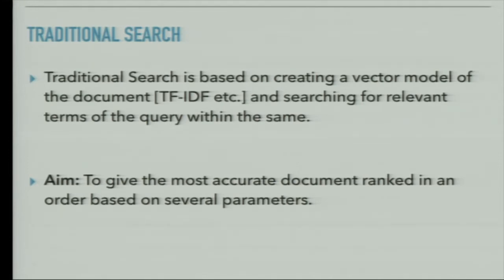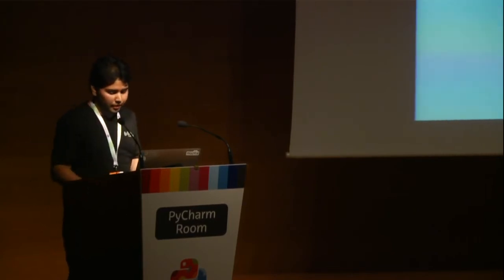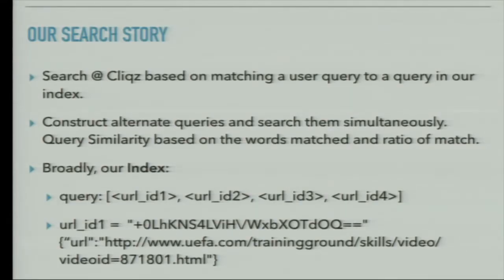Historically, search is a long-studied problem in information retrieval and web search. Traditionally, you create a vector model of your documents and your query, then do a match at real time, aiming to surface the best URLs for the user query. Over time, search engines evolved — the web became rich with Web 2.0, lots of media came in, and people expected more. Search at Clix is based on matching a user query with a query in our index, which is built on query logs. So if you type Facebook or FB, it goes to facebook.com.